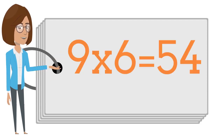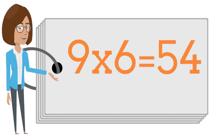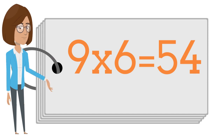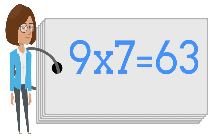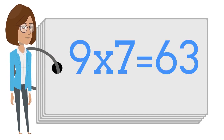Nine times six is fifty-four. Nine times seven is sixty-three.